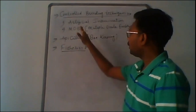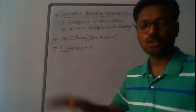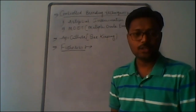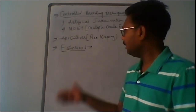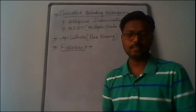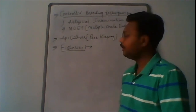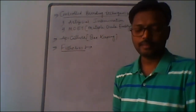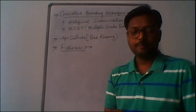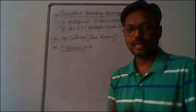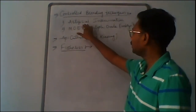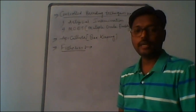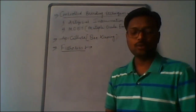Today's important topic is controlled breeding methods. After that we will discuss two important industries: apiculture, the rearing of honeybees, and fisheries, the rearing of fishes and other aquatic animals. Controlled breeding methods are artificial methods performed in the presence of experts in laboratories. They include two important things: artificial insemination and MOET — Multiple Ovule Embryo Transfer technology.